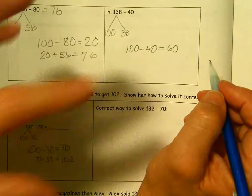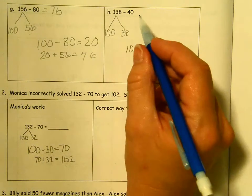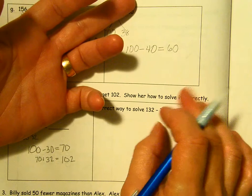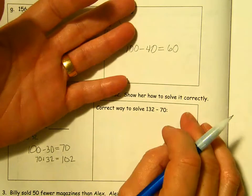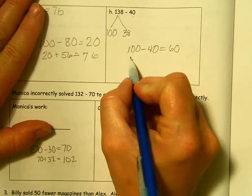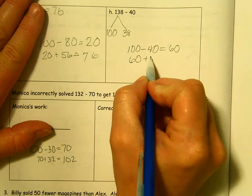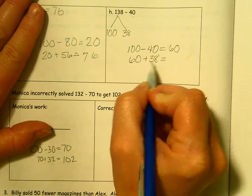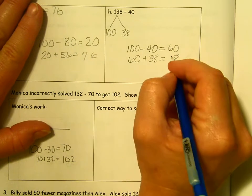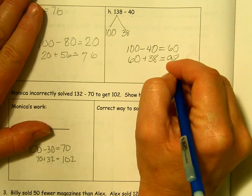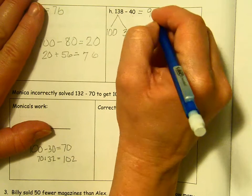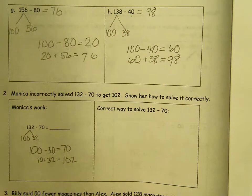10 minus 4 is 6 tens or 60. So I've taken away my 40, which is what I needed to do. And I have 60 left. But don't forget you had those 38 back here that you took away so that it would be easier. Now we have to put those parts back together. So 60 plus 38. 0 and 8 is 8. 6 plus 3 is 9. 138 minus 40 is 98.